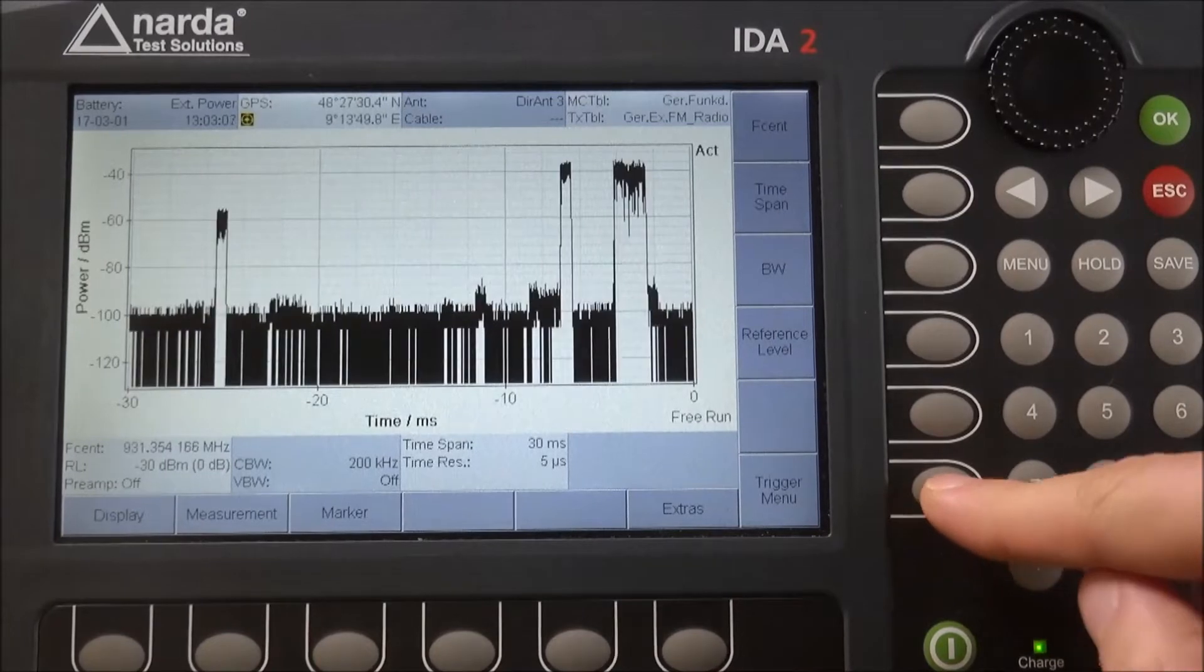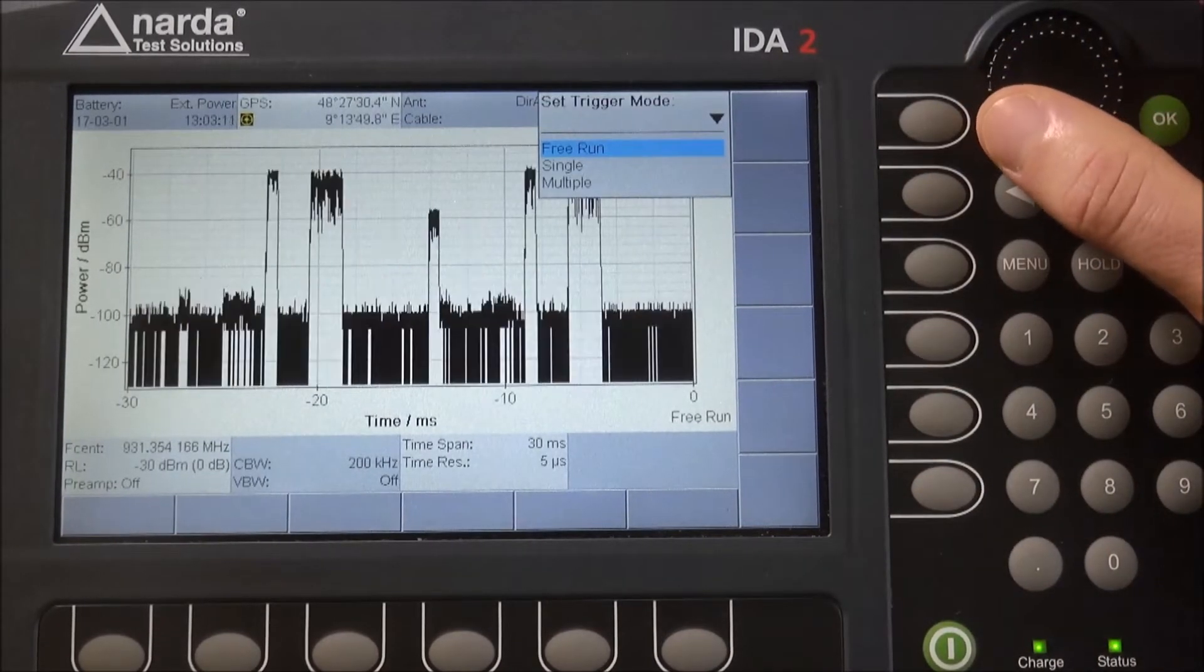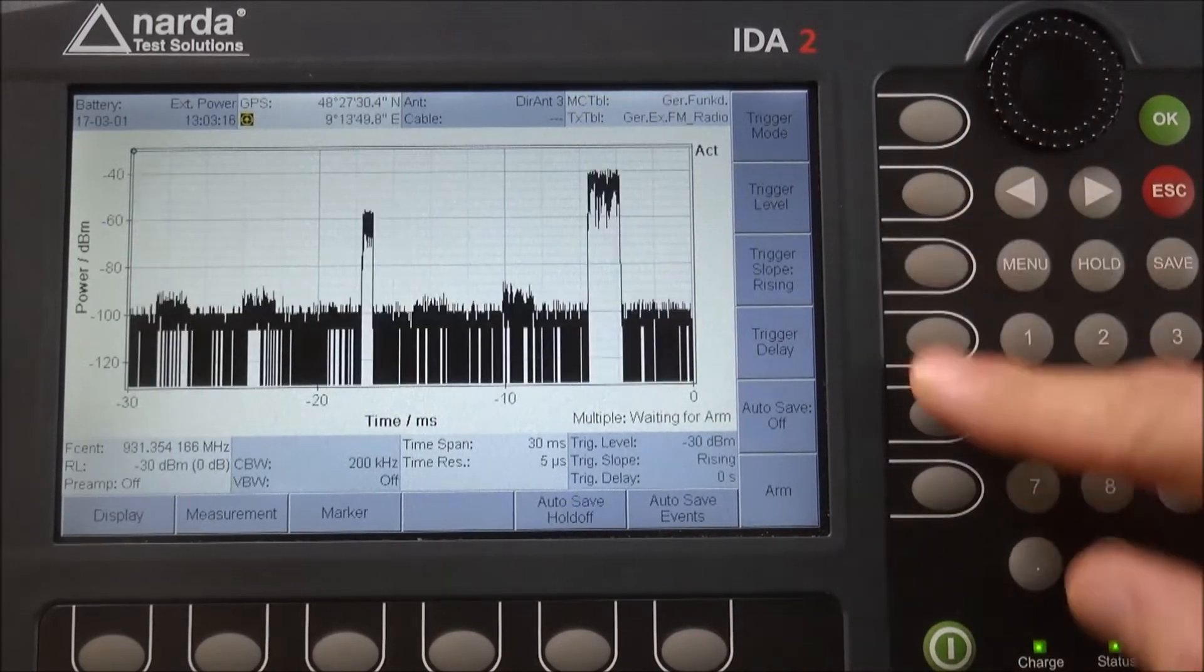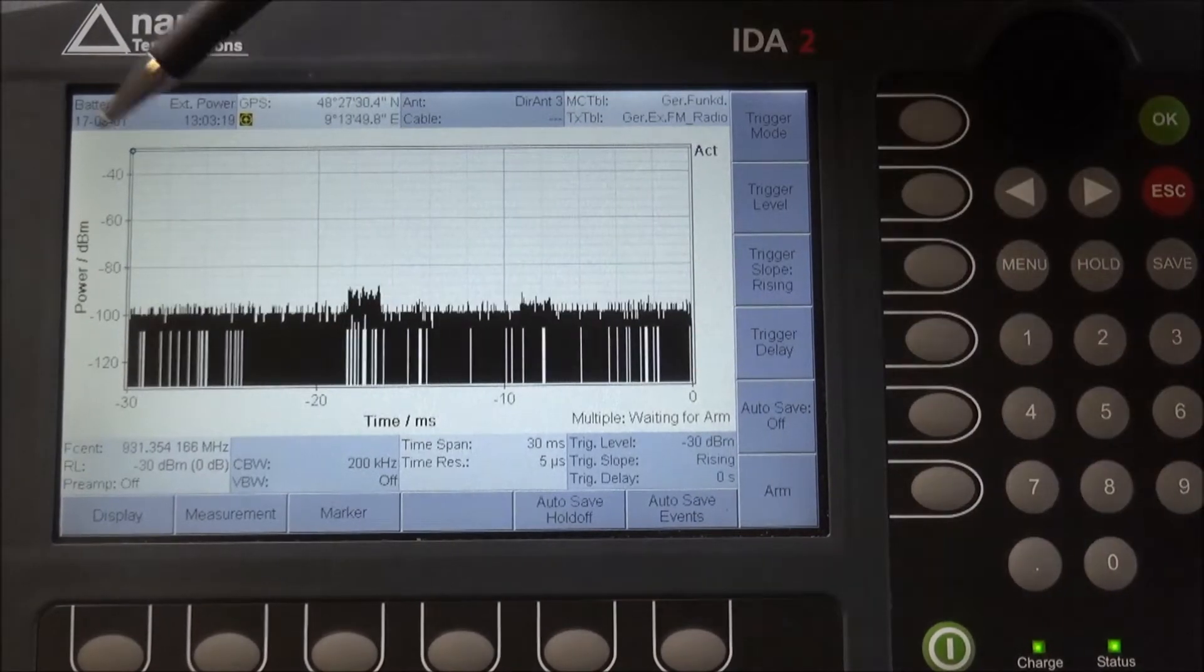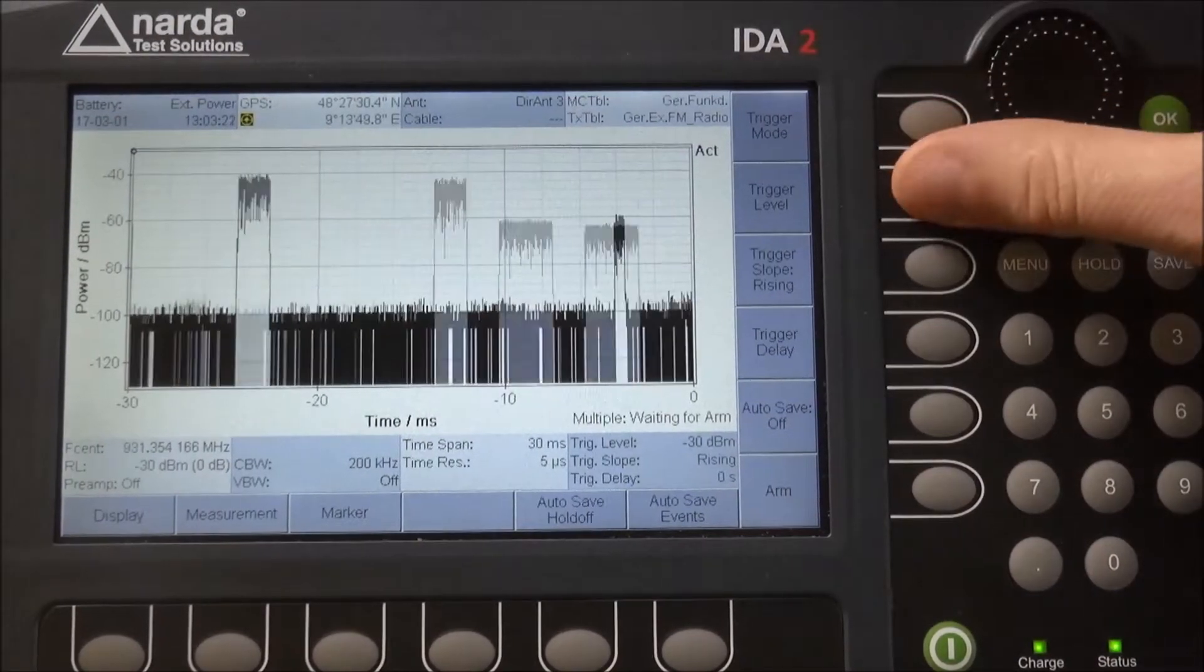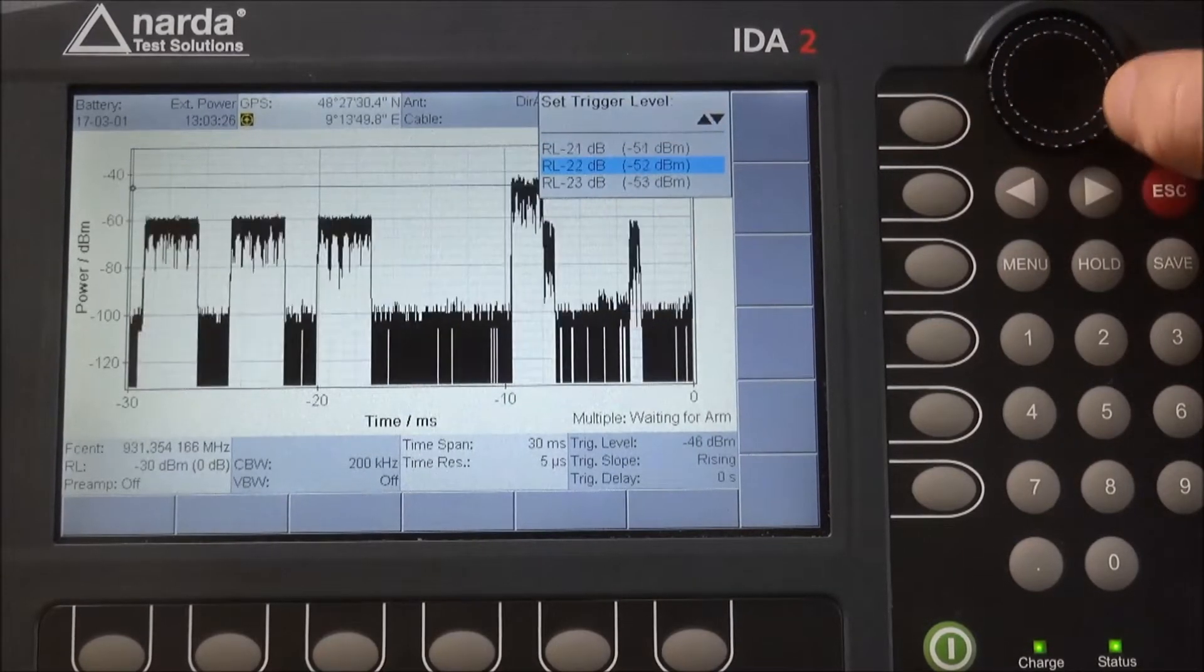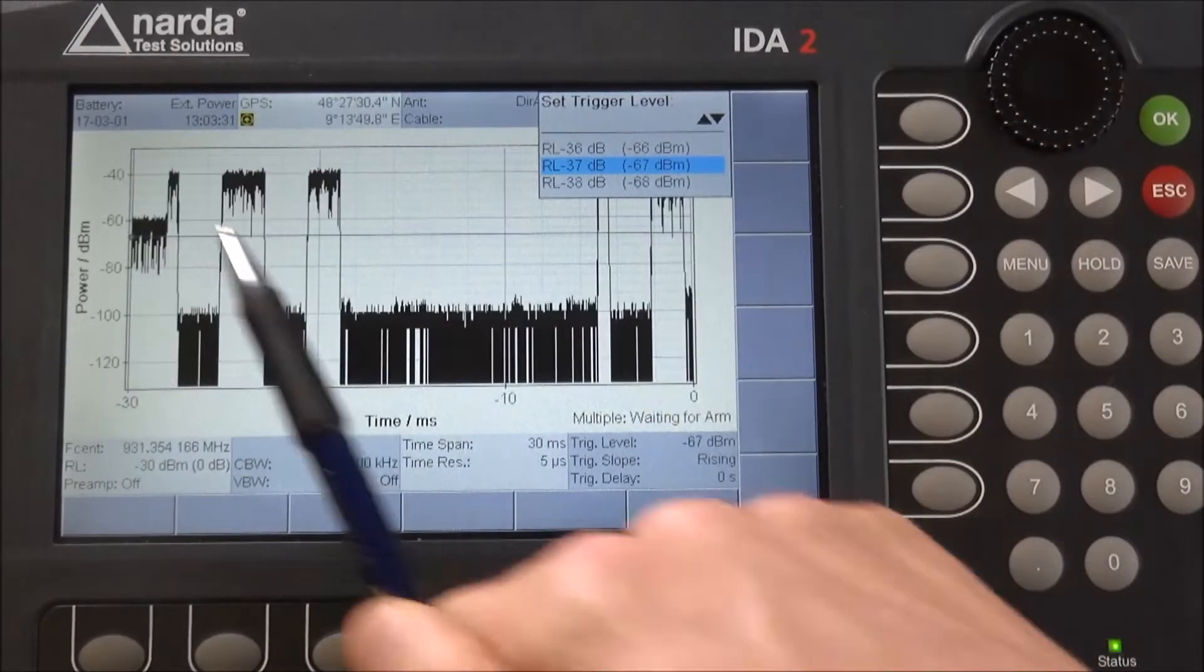When clicking on trigger menu, we can go on trigger mode and for example on multiple. We can change the trigger level. You can see the trigger up here. We can decrease it slightly. You will also see correspondingly the trigger line.